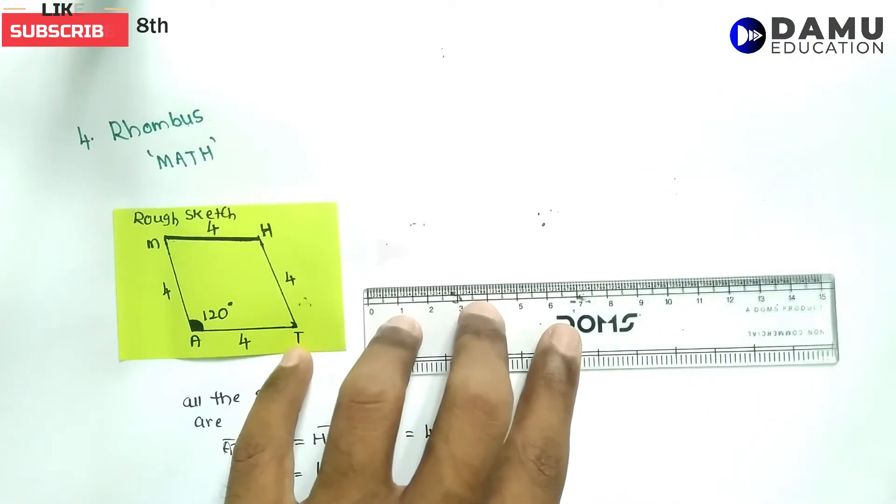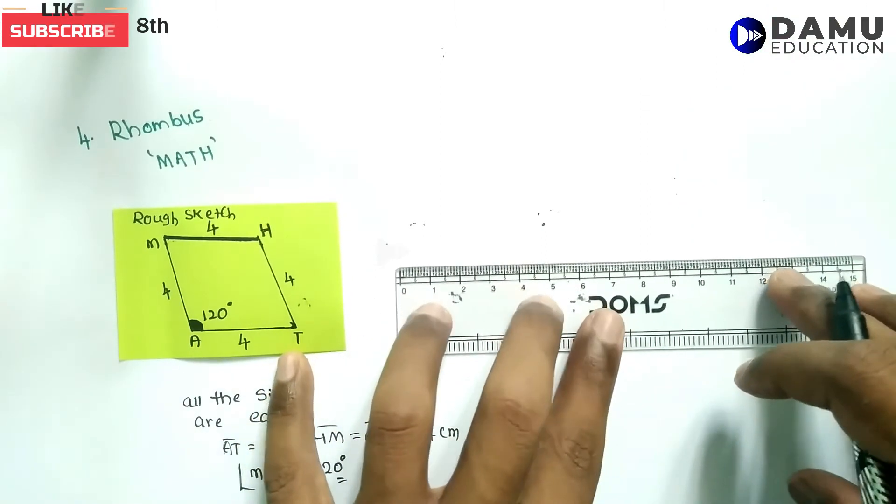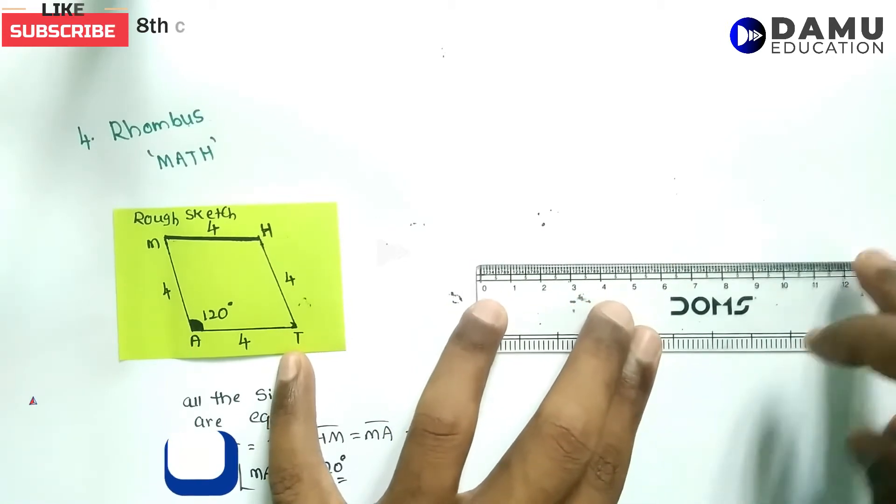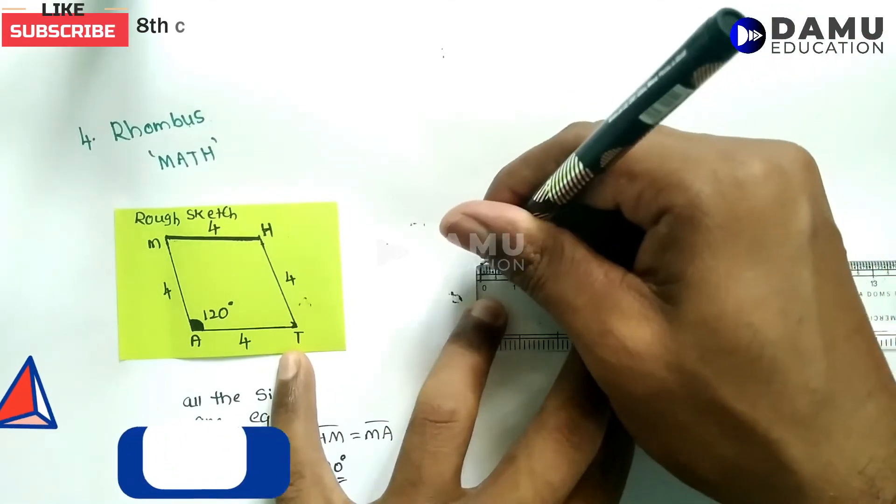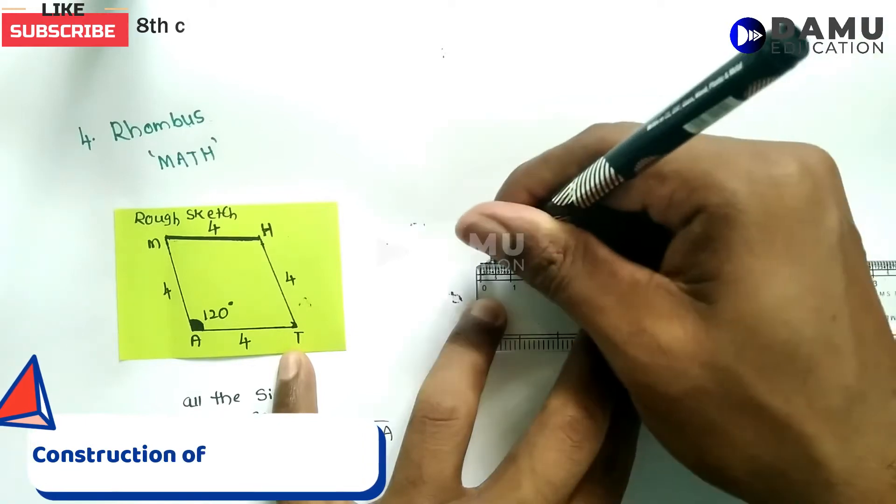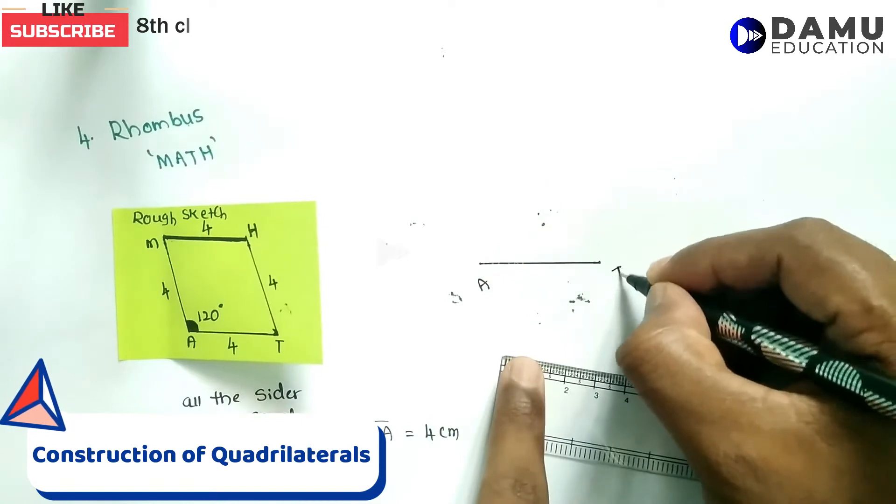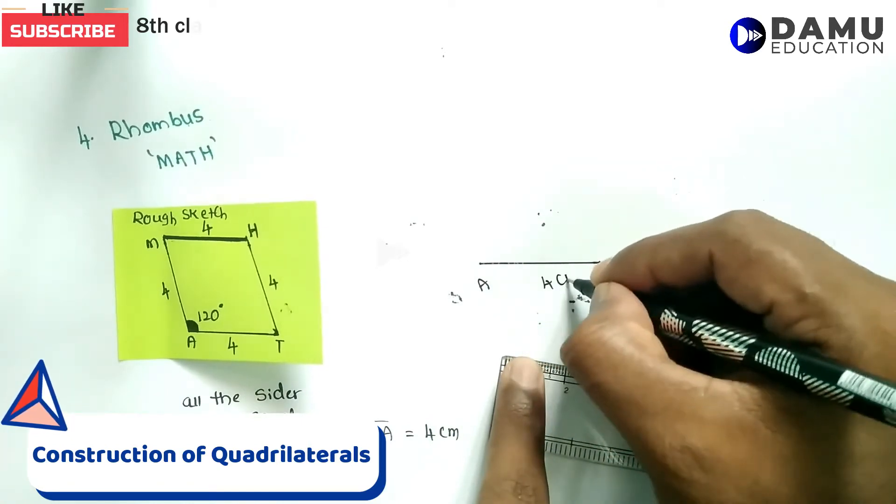Let us draw our base AT. Base AT equals 4 cm. Draw it horizontally using your scale. This is AT, 4 cm.